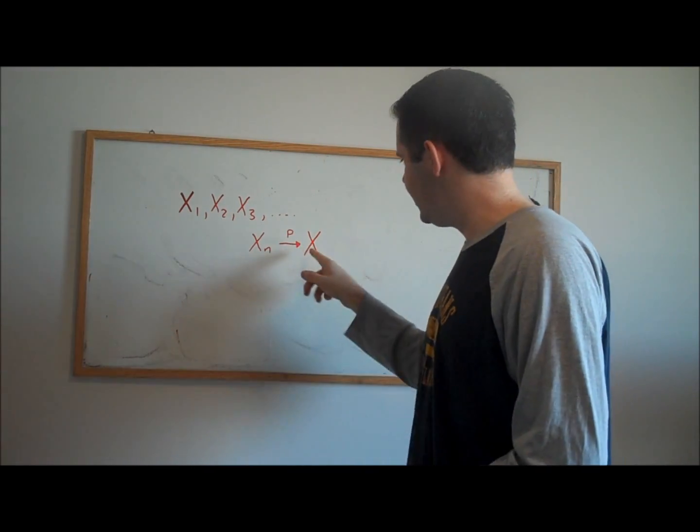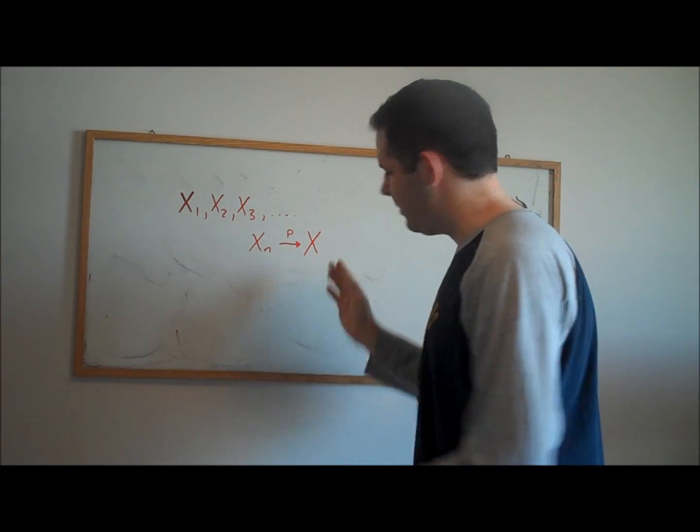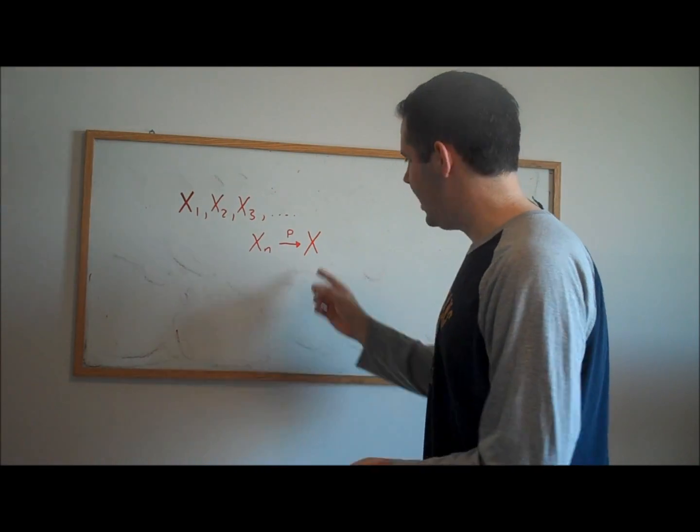This sequence of random variables, Xn, converges in probability to some random variable, limiting random variable, X.